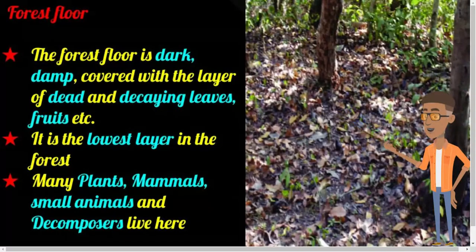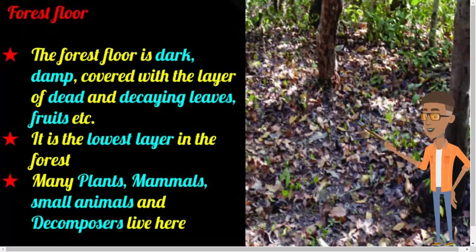The forest floor is dark and damp, covered with a layer of dead and decaying leaves, fruits, twigs, and herbs. It provides favorable conditions for seeds to germinate into seedlings, and many seedlings grow up into trees. Moss and frogs are found on the forest floor, which is warm, damp, and shady. Many species of plants, animals, and decomposers are found here with unique adaptations to survive minimal sunlight. Large animals like elephants, leopards, jaguars, rhinoceros, snakes, tigers, and many more are found on the forest floor.